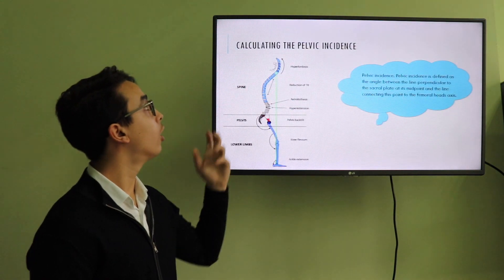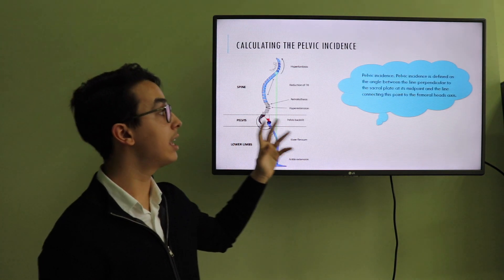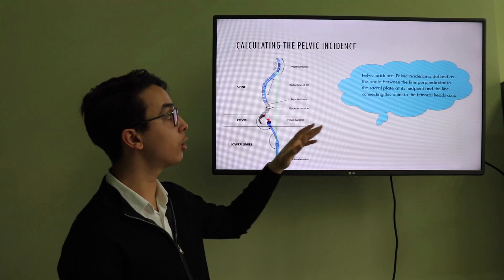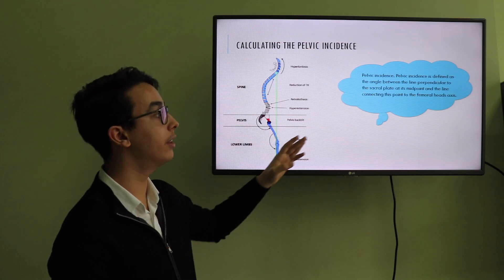Pelvic incidence. Calculating the pelvic incidence. Pelvic incidence is defined as the angle between the line perpendicular to the sacral plate at its midpoint and the line connecting this point to the femoral head axis.